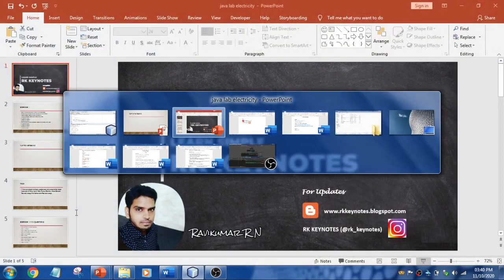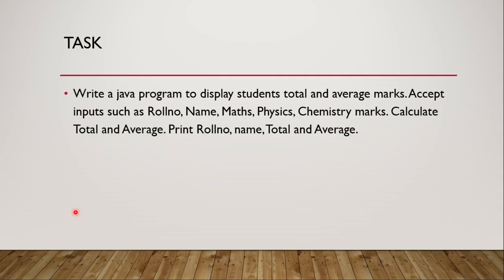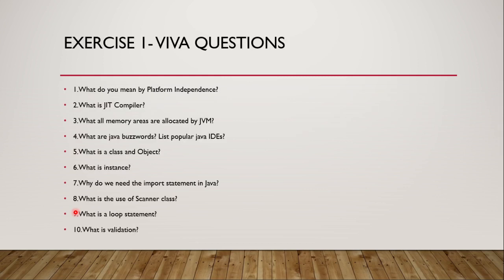I have Viva questions for you from exercise one — just go through them and I'll reveal the answers in the next video. There is also a task: write a program to display a student's total and average marks. Accept inputs such as roll number, name, maths, physics, and chemistry marks. Calculate total and average, then print roll number, name, total, and average. Try this and let me know in the comments. In the next video we'll talk about exercise two with another problem. If you have any queries or suggestions, let me know in the comment section. Thank you and thanks for watching.